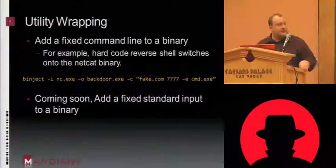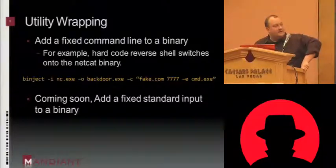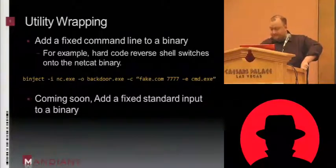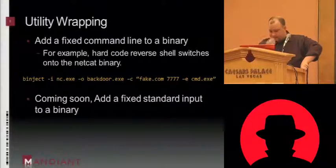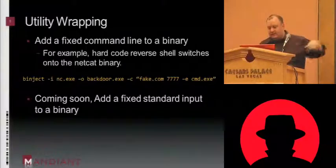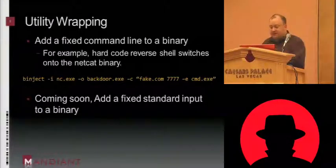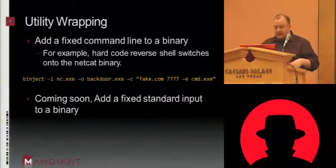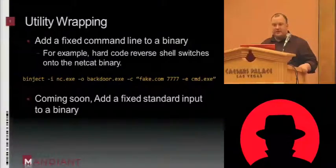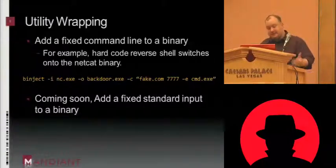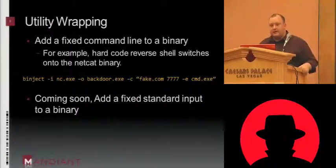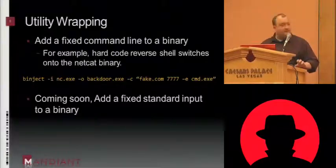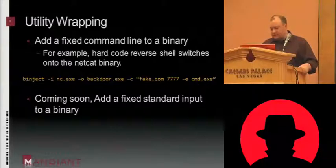This reverse shell will connect out to fake.com on a certain port and launch a command shell connected to it. Eventually I'd also like to get a function put in here to attach a fixed set of standard input to a binary, that sort of thing. And this whole thing works via entry point redirection — I redirect the entry point before the process starts, I get all this stuff set up, I change around the command line arguments in memory. It works pretty well.